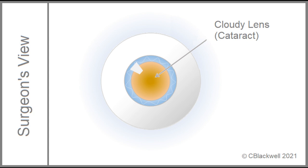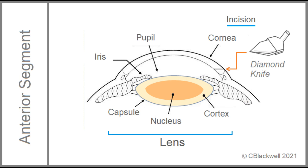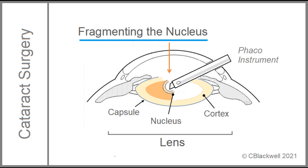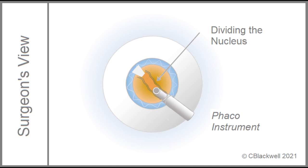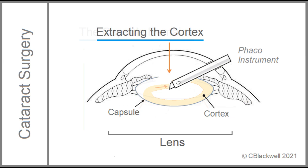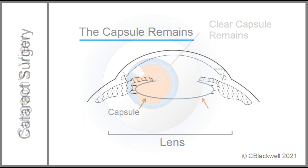This would be an idealized surgeon's view through the operating microscope at the start of surgery, with the cloudy lens seen through the dilated pupil. To enter the eye, an incision is made at the edge of the cornea. Then forceps are used to open the front part of the lens capsule to gain access to the inside of the lens. Part two is removing the substance of the lens. That begins by using ultrasound to fragment the hard nucleus. This is the surgeon's view of the phaco instrument dividing the hard nucleus into two halves, which will be individually digested. Then vacuum is used to peel out the remaining cortex. The aim is to leave the capsule intact, ready to hold the implant.